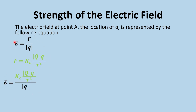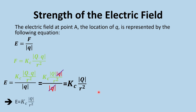Substituting F into E = F/Q and simplifying, the test charge Q cancels out. The strength of the electric field can therefore be found using E = Kc·Q / R², where Kc is Coulomb's constant, Q is the source charge, and R is the distance from the source charge to the point where we want to measure the electric field.